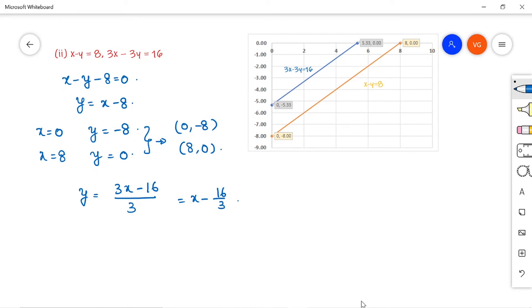Suppose if you are taking x is equal to 0, y I will get it as minus 16 by 3. Then suppose if you are taking x as 16 by 3, then we will get y is equal to 0. So the two points that we are getting are 0 comma minus 16 by 3 and 16 by 3 comma 0.